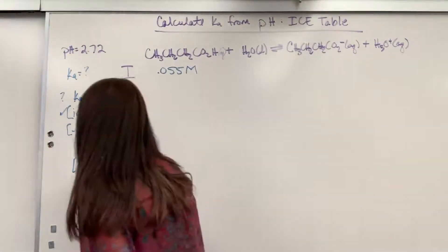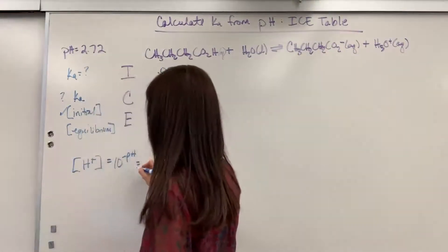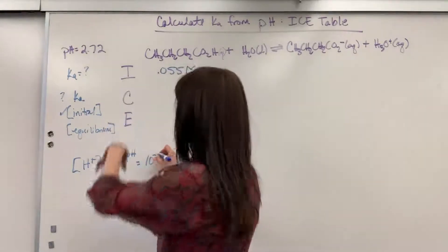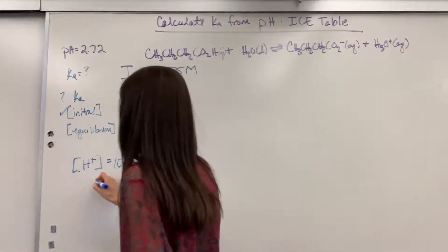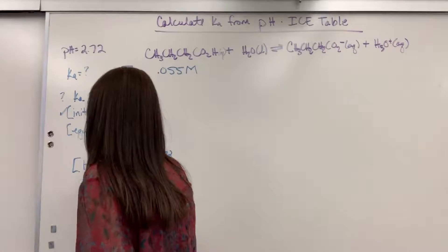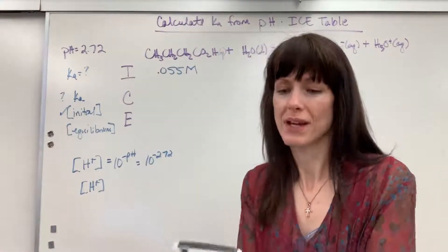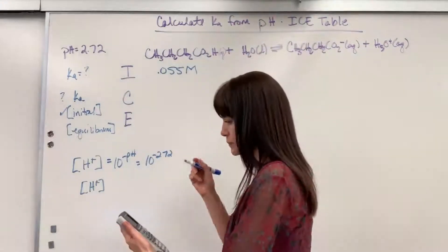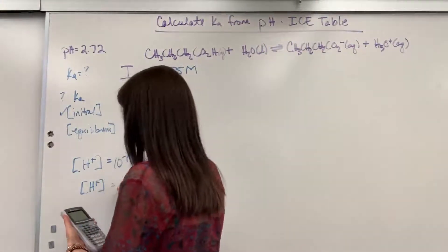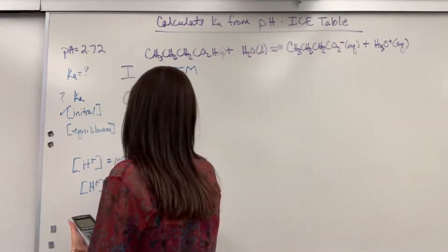So let's go ahead and plug it in. We are going to have 10 to the negative 2.72. And so when I plug that in, and again, it's the same thing as hydronium. When we plug that in, I get a hydrogen concentration of 0.00191.